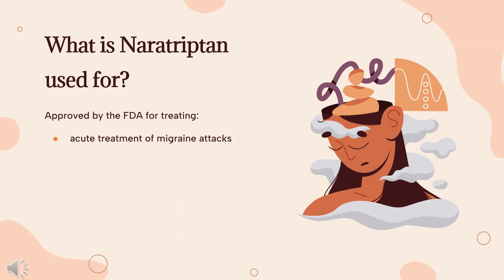What is Narotriptin used for? It is indicated for the acute treatment of migraine attacks with or without aura in adults.